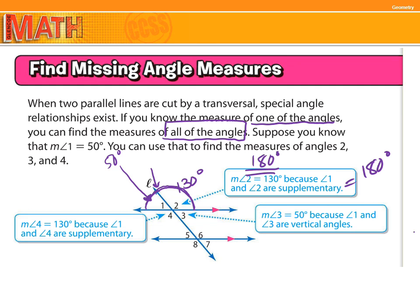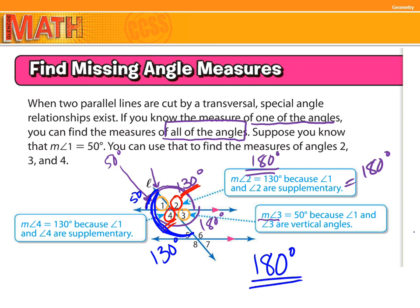Angle four and angle three also have to equal 180 degrees. The measurement of angle three is 50 degrees because one and three are vertical angles — whatever this angle is, the angle on the opposite side of the intersection has to be the same. So angle three is 50. If angle two is 130, then angle four is also 130. There are multiple ways of figuring out the answers, but remember: all angles on a straight line must equal 180 degrees.